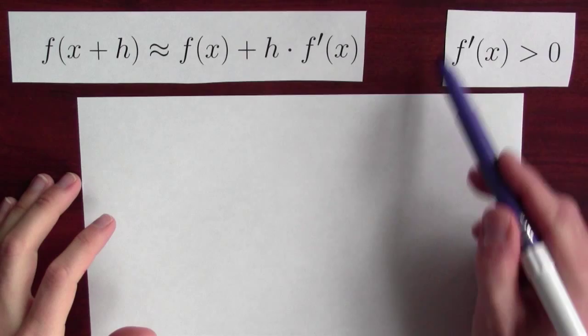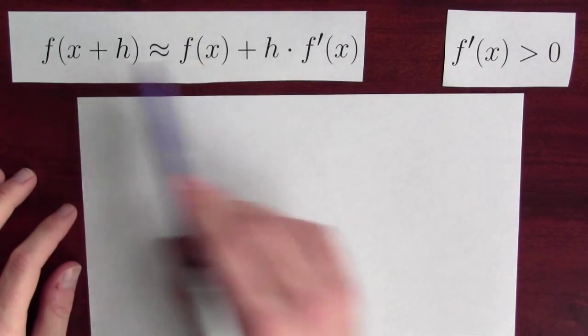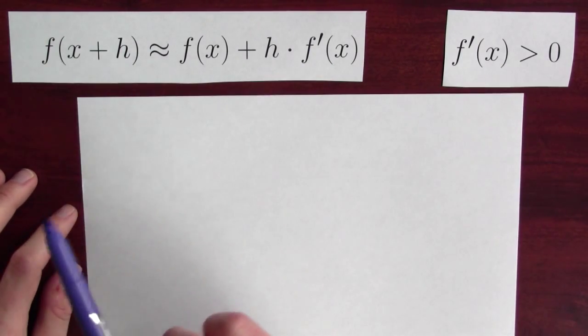We can try to explain what we're seeing here formally with a calculation on paper. So let's suppose that the derivative is positive over a whole range of values. And we also know something about how the derivative is related to the function's values.